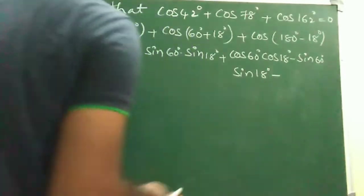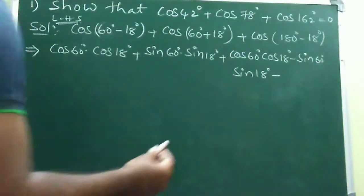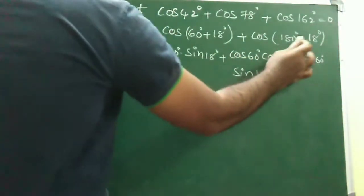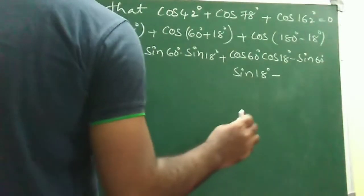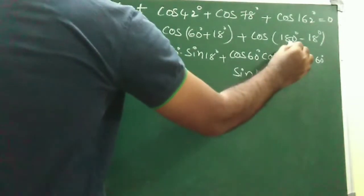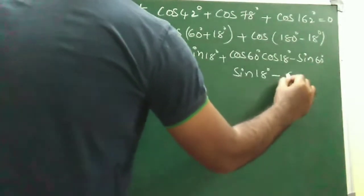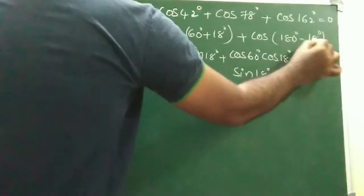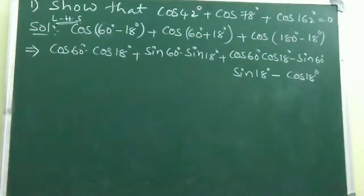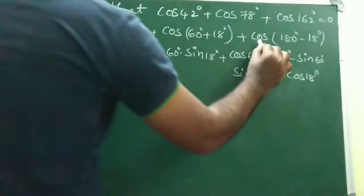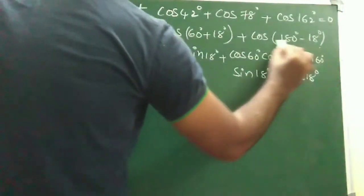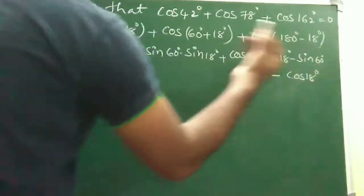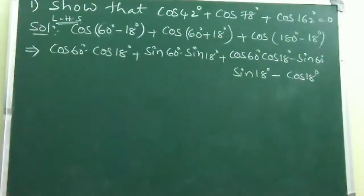In the same manner, apply cos(A + B) = cos A·cos B - sin A·sin B. Coming to the last term, it is of the form cos(180° - θ), which is in the second quadrant, so cos is negative. Hence the value is minus cos 18°.